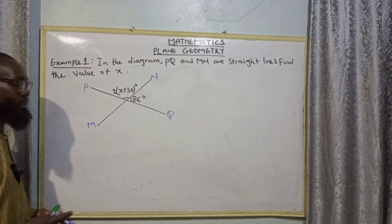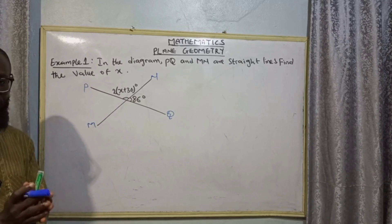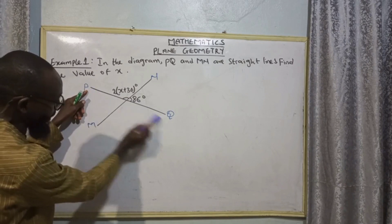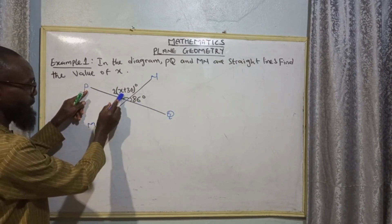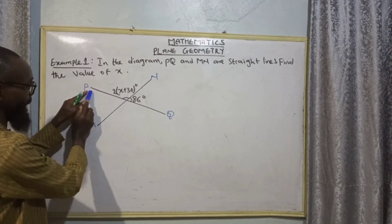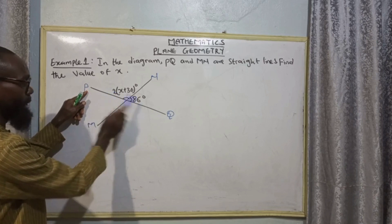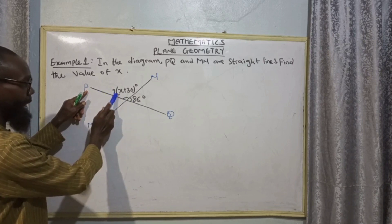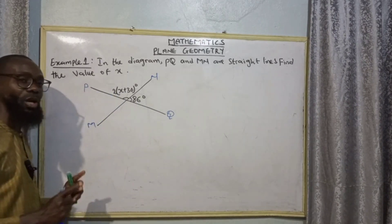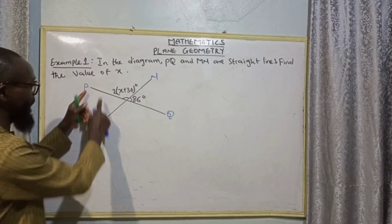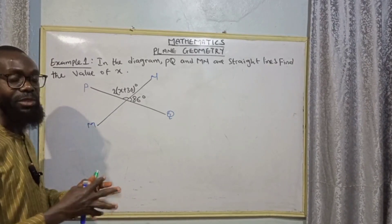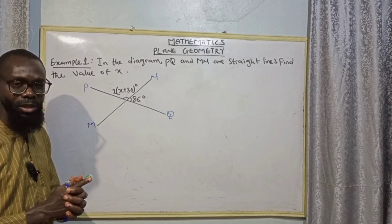Now when we look at this very well, we can solve this in two ways. Looking at line PQ, we can see that we have two angles on it: 2(x + 30) and 66 degrees. If we recall, the first theorem we discussed is that the sum of angles on a straight line equals 180 degrees — that is the first way of solving it.